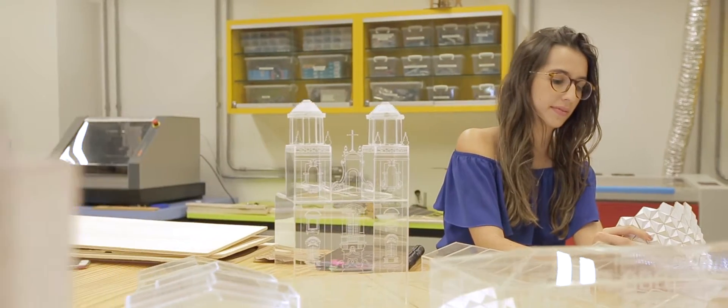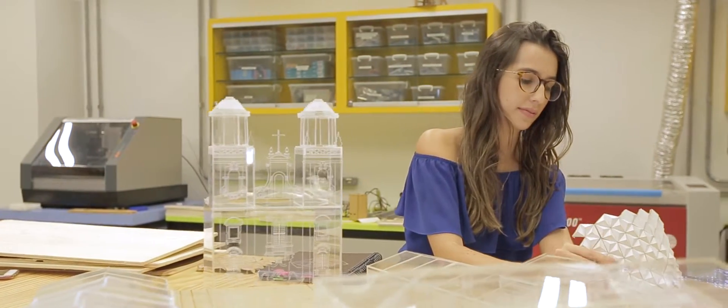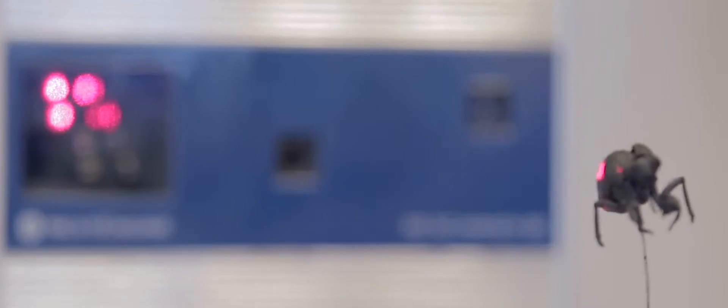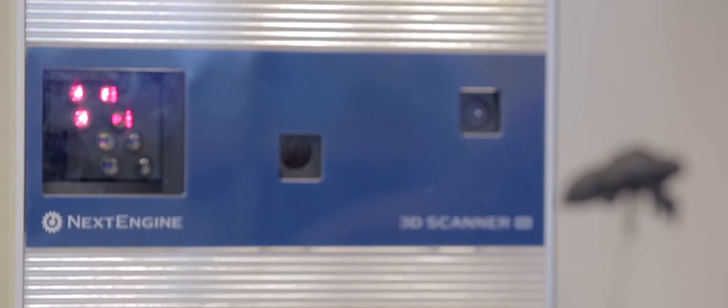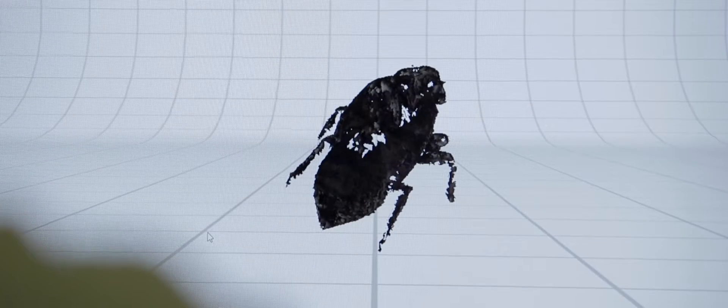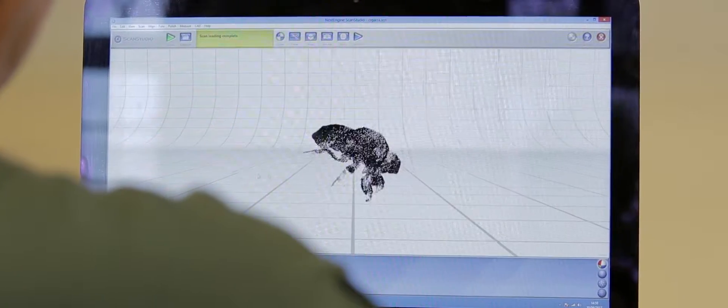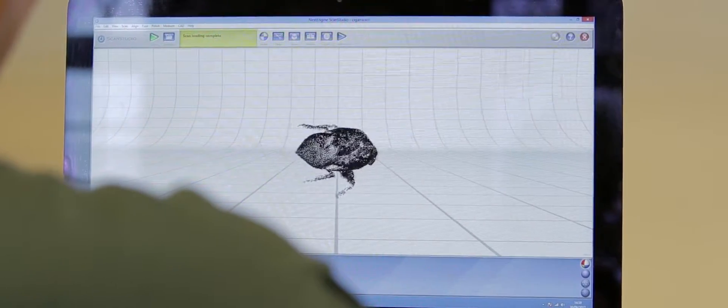Todo o meu processo criativo se deu inicialmente por meio de maquetes físicas. Então eu procurei o LOCO para digitalizar essas minhas maquetes. Esse scanner, a gente posiciona o objeto em uma plataforma giratória, e ele vai fotografando através de um laser, e ele digitaliza toda a volumetria tridimensional.